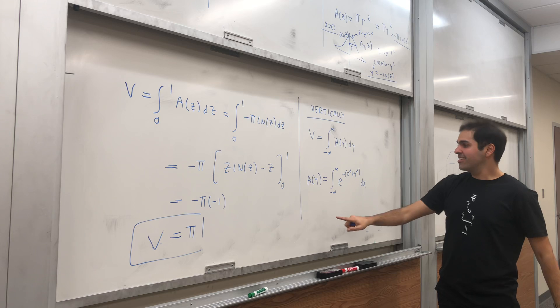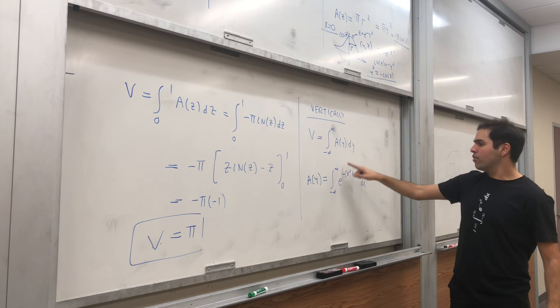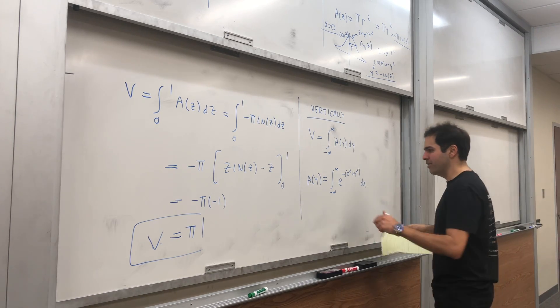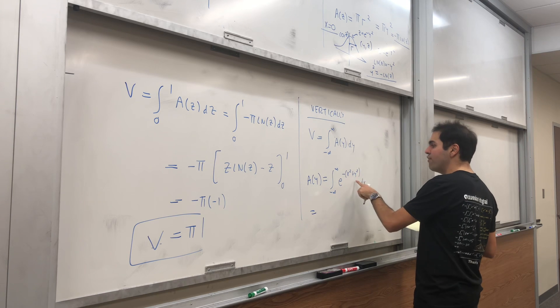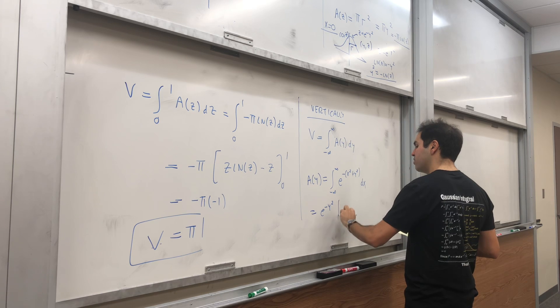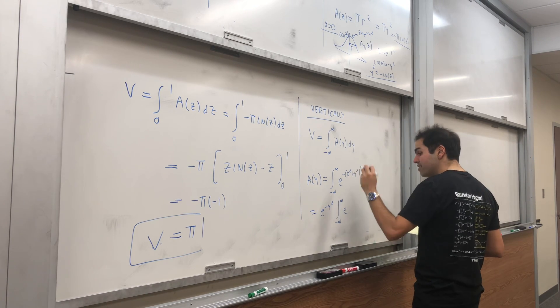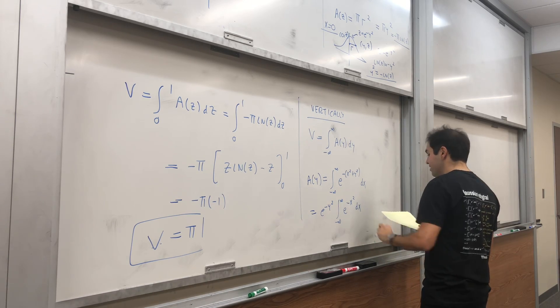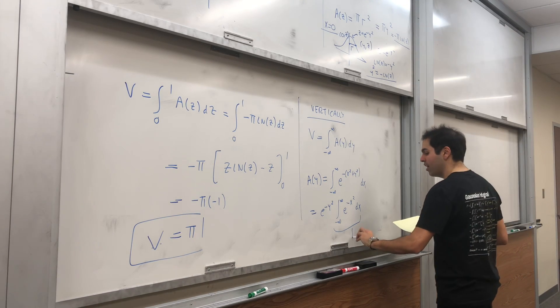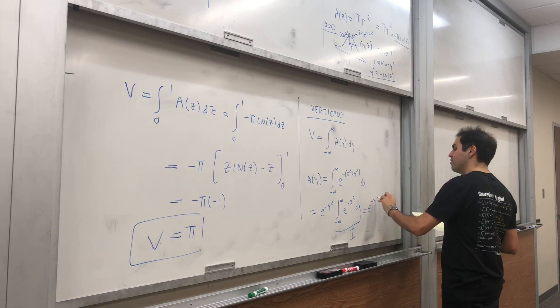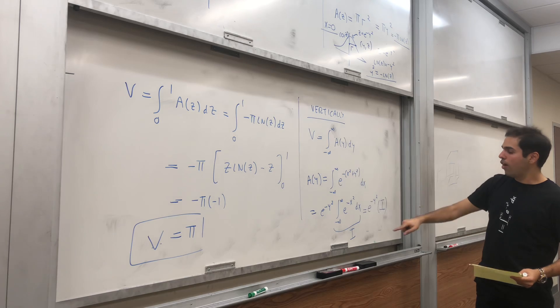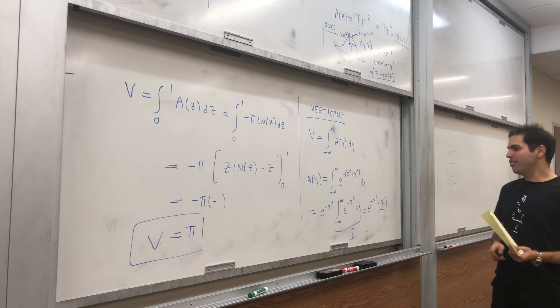e^(-y²) doesn't depend on x, so it pulls out: e^(-y²) times the integral from -∞ to ∞ of e^(-x²) dx. But this is precisely the full Gaussian integral, which I like to call I. So A(y) = e^(-y²) · I.